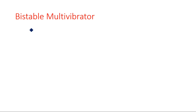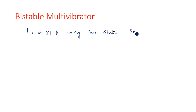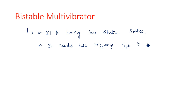Recalling from the previous video on the introduction of multivibrators: the bistable multivibrator has two stable states. As it has two stable states, it needs two triggering pulses to change the states. Triggering pulses are extra inputs coming from the differentiator circuits.